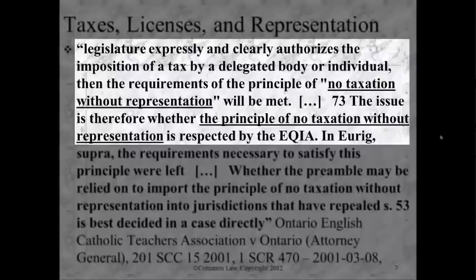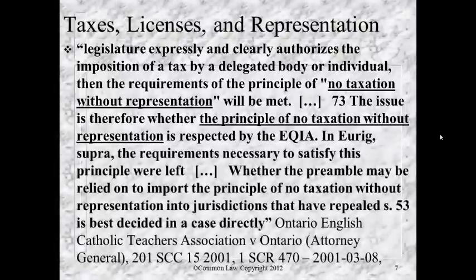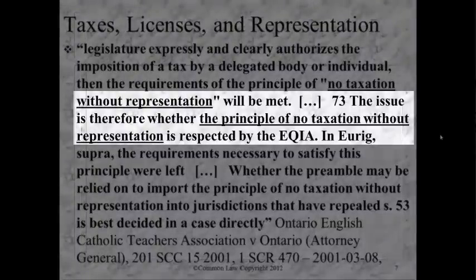If you look at the Magna Carta, that's exactly what they were doing — they were representing people and putting people to their private law. One of the chapters in the Magna Carta says that we won't put anyone to their law without producing witnesses. This has just been going on for a long time. The issue is whether the principle of no taxation without representation is satisfied, and it goes on — there's no taxation without representation in the U.S. and Canada.